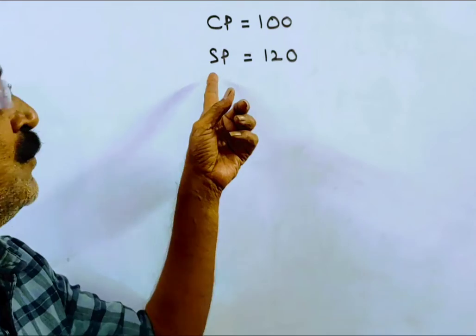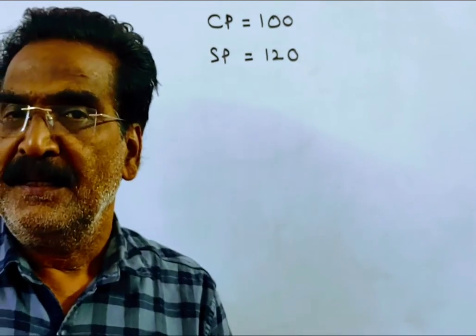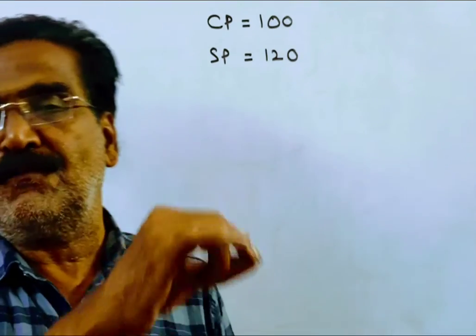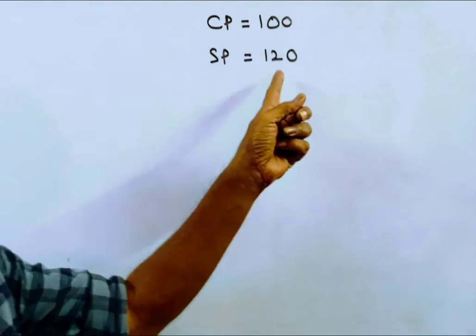So selling price becomes 120. This profit percent is after a discount of 25%, which means this selling price is 75% of the market price.